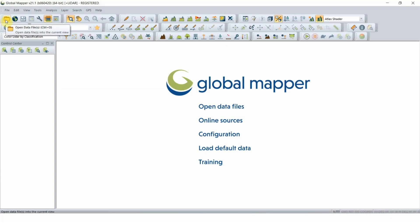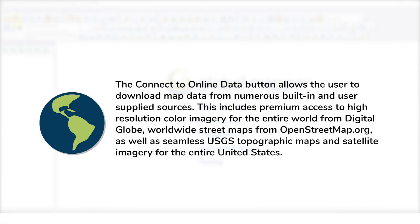The next button is for Connecting Online Data. This allows users to download map data from numerous built-in and user-supplied sources. This includes premium access to high-resolution color imagery for the entire world from DigitalGlobe.